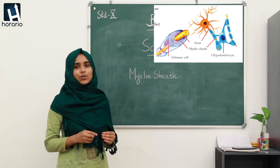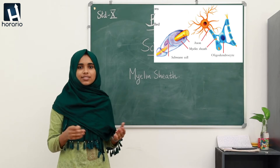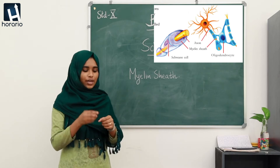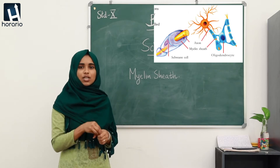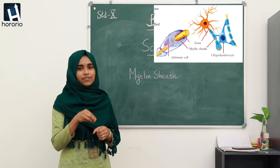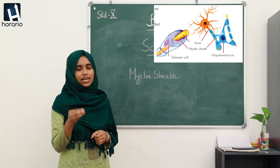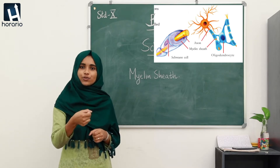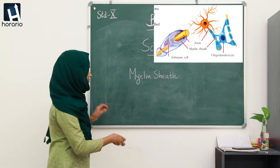A single neuron can't control and coordinate the whole activities. So a group of neurons, or a bundle of neurons, we can call it as a nerve. A bundle of neurons is known as a nerve.